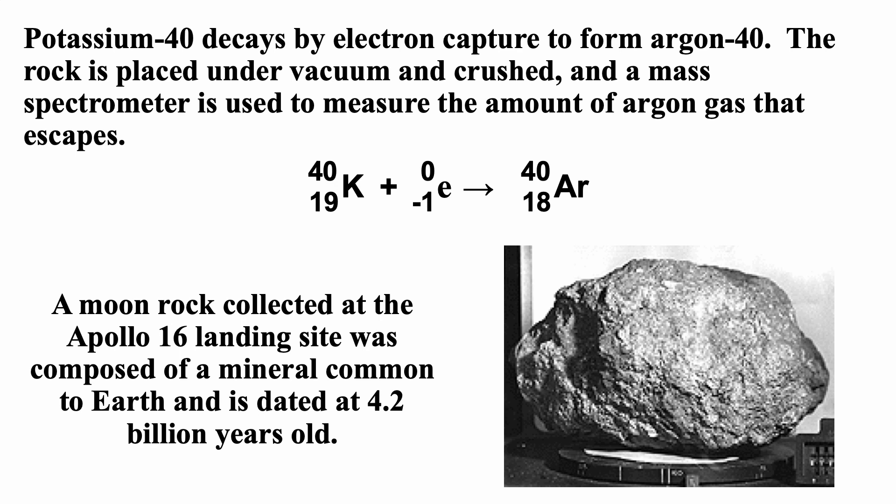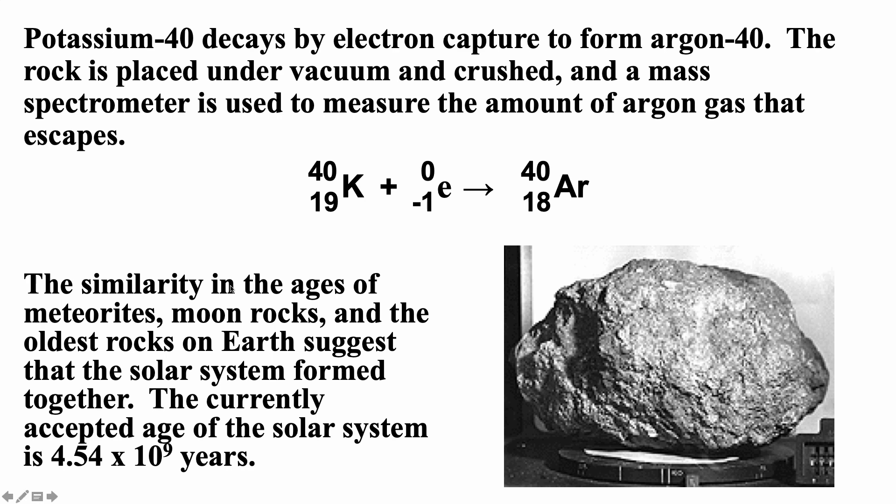A moon rock collected at the Apollo 16 landing site was composed of mineral common to Earth, and it is dated at 4.2 billion years old. Kind of cool. The similarity of ages of meteorites, moon rocks, and the old rocks on Earth suggests that the solar system formed together. The current accepted age of the solar system is about 4.5 times 10 to the 9th years. This just comes from the radiometric dating using uranium and using potassium.